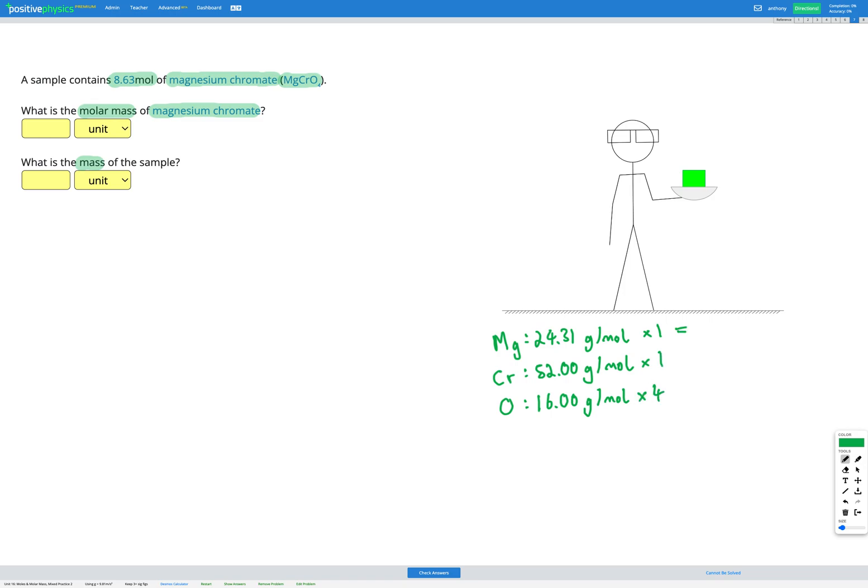So let's multiply those out. That gets 24.31 grams per mole of magnesium, 52.00 grams per mole of chromium, and for oxygen, we've got four multiples of that. So that gives us 64.00 grams per mole of oxygen.